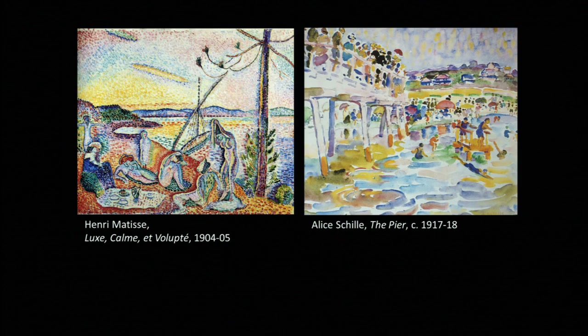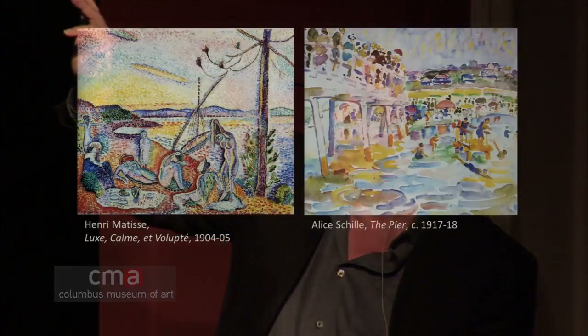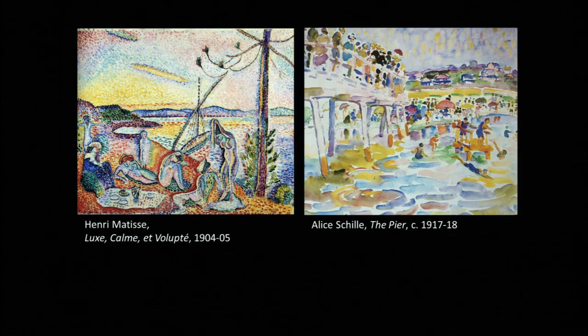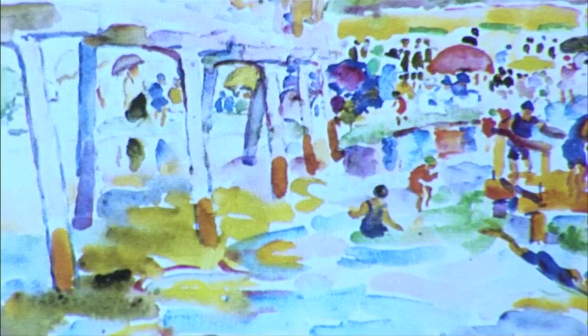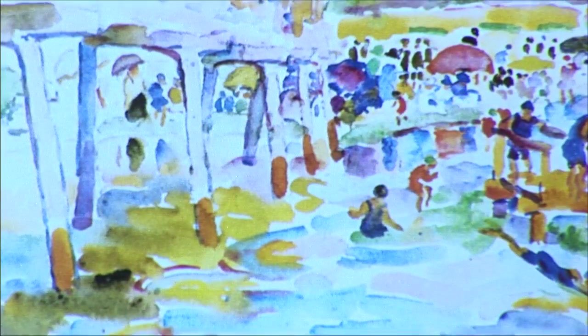One of the things Schilly introduces to American modernism is a fascination with pointillism. When we think of pointillism, we think of Seurat's very academic, tight, almost scientific use of dots. But artists like Duran, Vlaminck, and Matisse were using expressive variants of pointillism, and Schilly really responds to that. In this wonderful beach scene, the pier, you can see how she actively manipulates the daubing to give it an expressive, vibrant effect. Tragically, this picture is no longer with us—it was destroyed in a fire in Nashville.